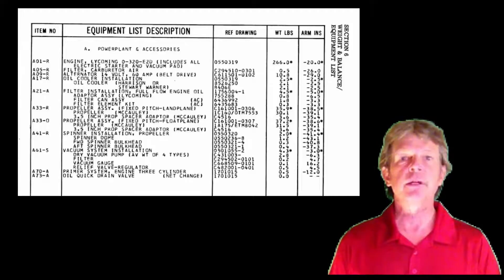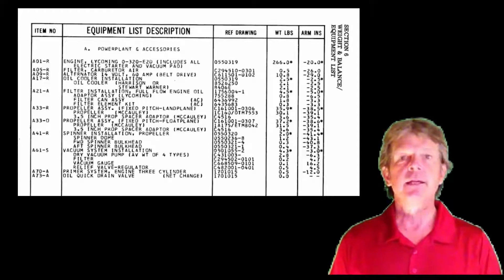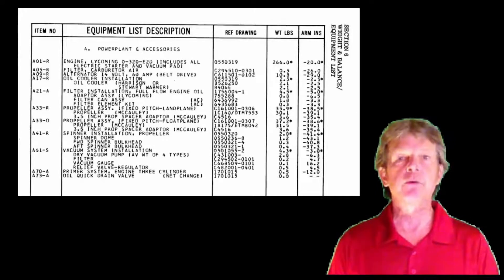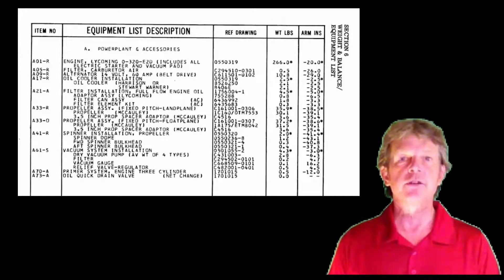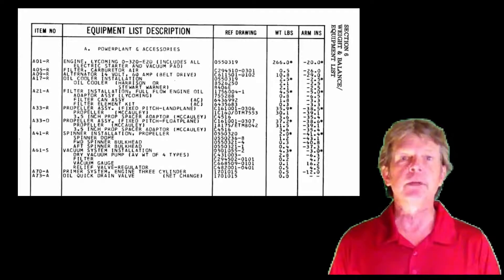The next thing we'll do is look at the equipment list. The equipment list is required for weight and balance, but it has to be kept up to date, and it will list everything that is supposed to be installed or can be installed on that airplane.